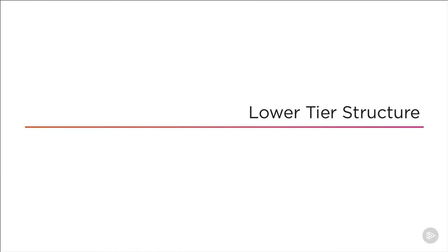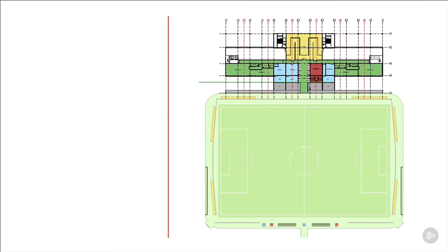Most of the time when you're working on a project in the office you're going to have some information from other design consultants to get you started on your building model. Often this will come from the architect in the form of rough plans, sections and maybe even the start of a Revit model. The first thing we want to do when working with Revit models we receive from other disciplines is to work out what information in those models we want to use.